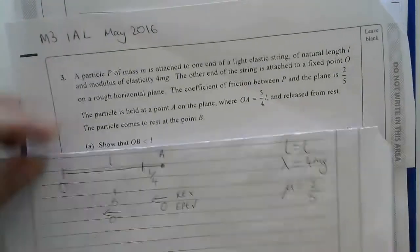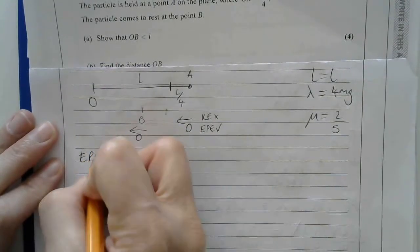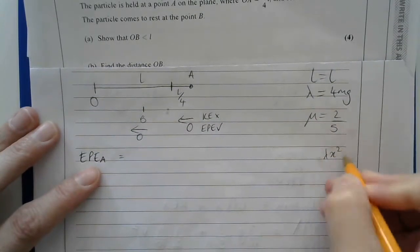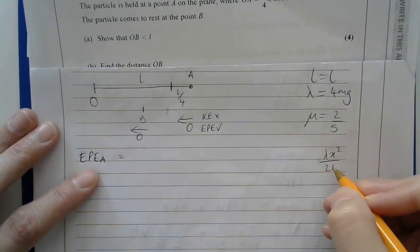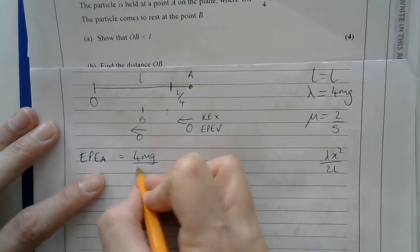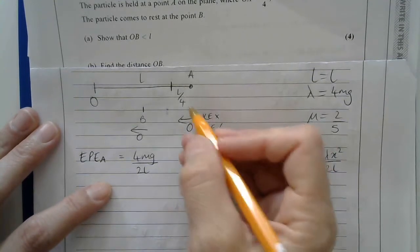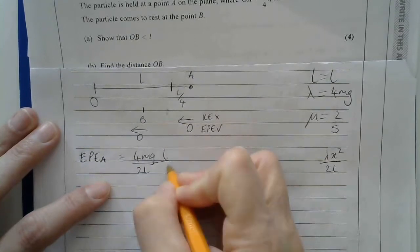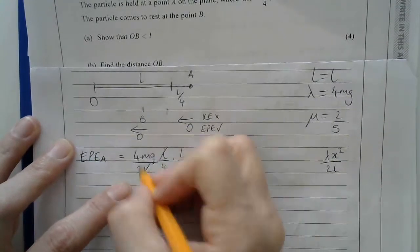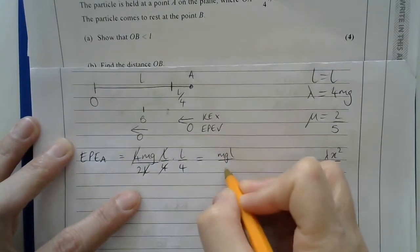If I look at the elastic potential energy at A, then the formula is lambda times the extension squared over 2 times the natural length. In this case, it's going to be lambda, which is 4mg, divided by 2 times the natural length. The natural length is L, so I've just got 2L there, times by the extension squared, which is L over 4 times L over 4. I can see that an L is going to cancel, a 4 is going to cancel, and I'll end up with mgL over 8.